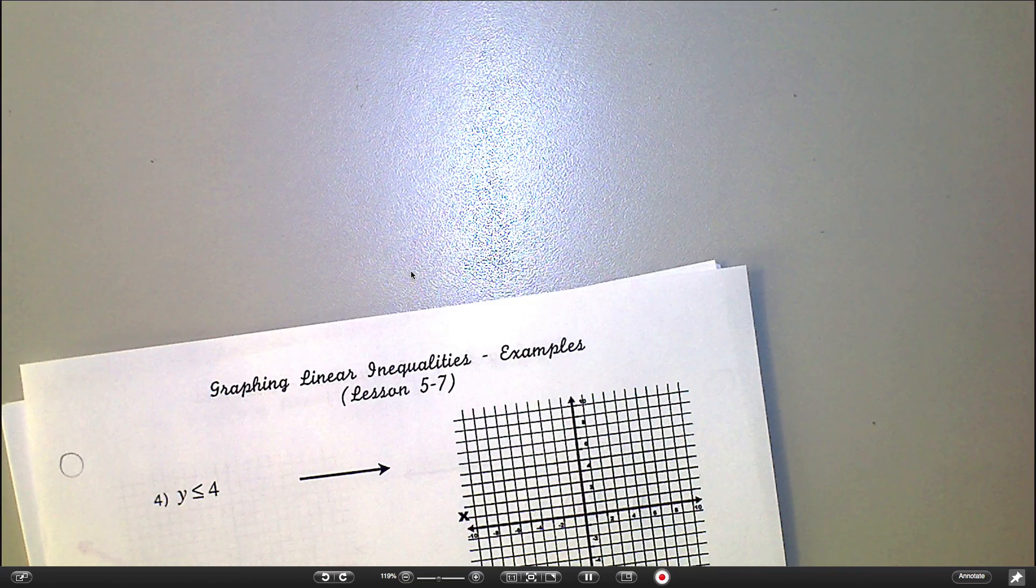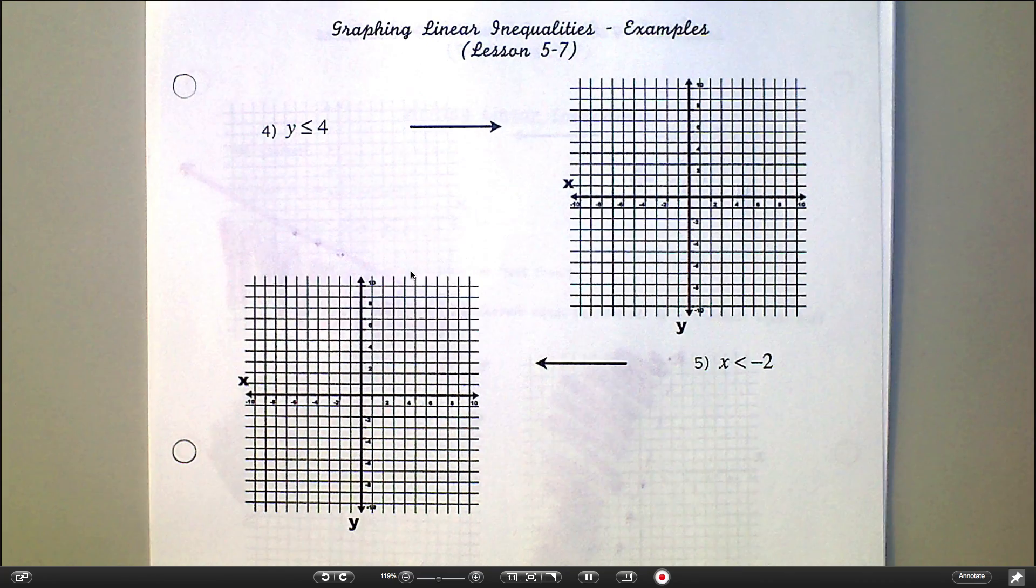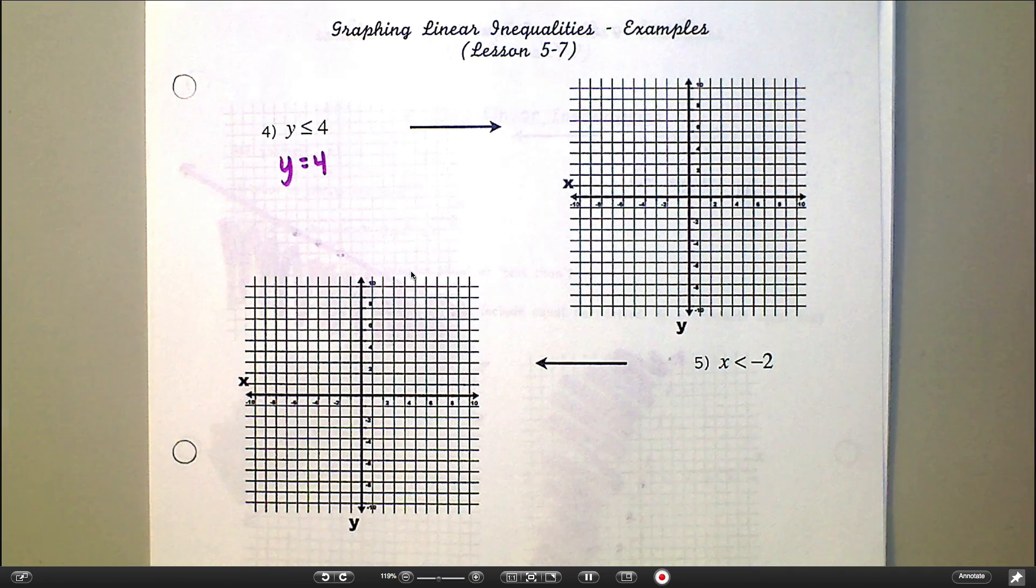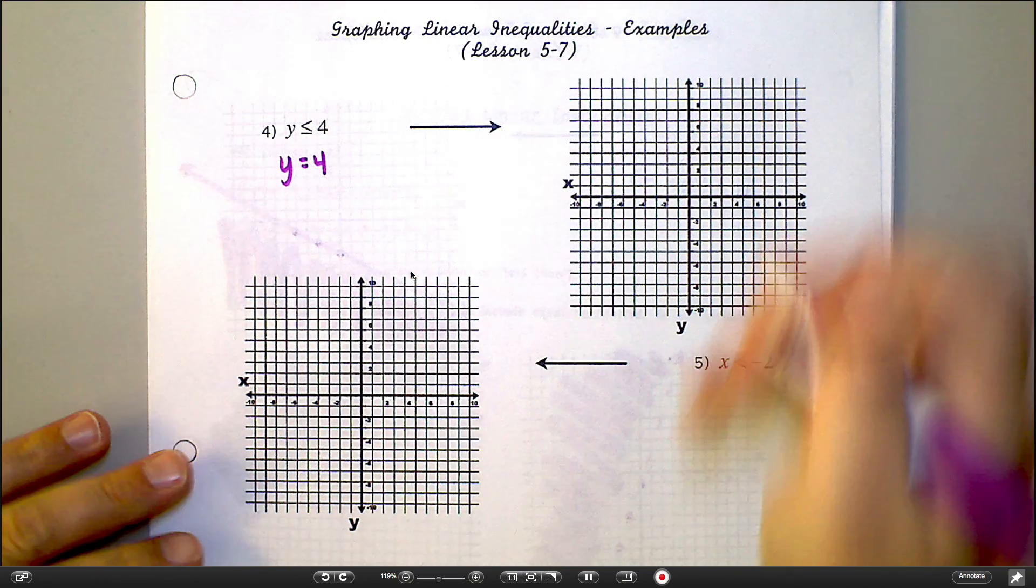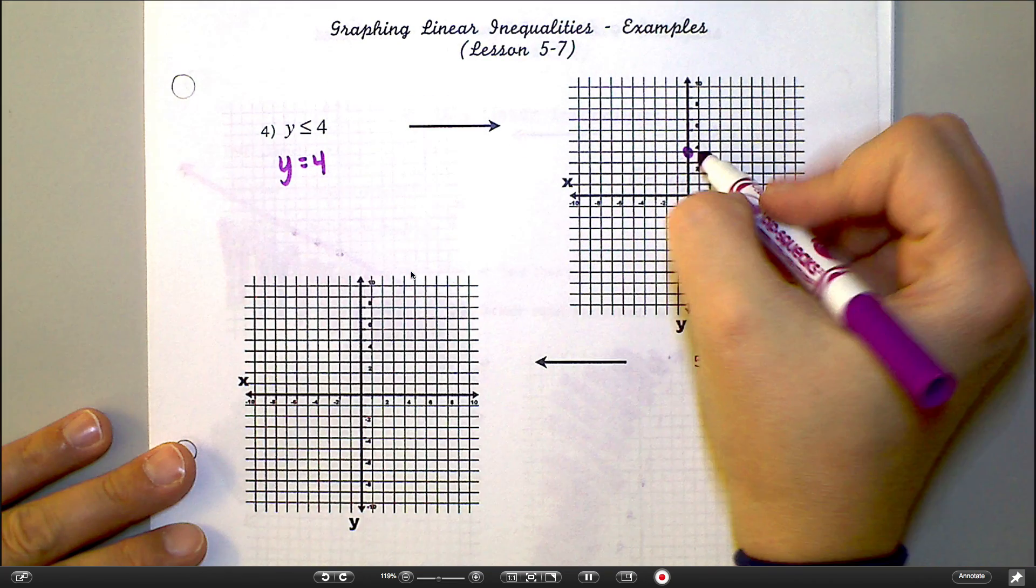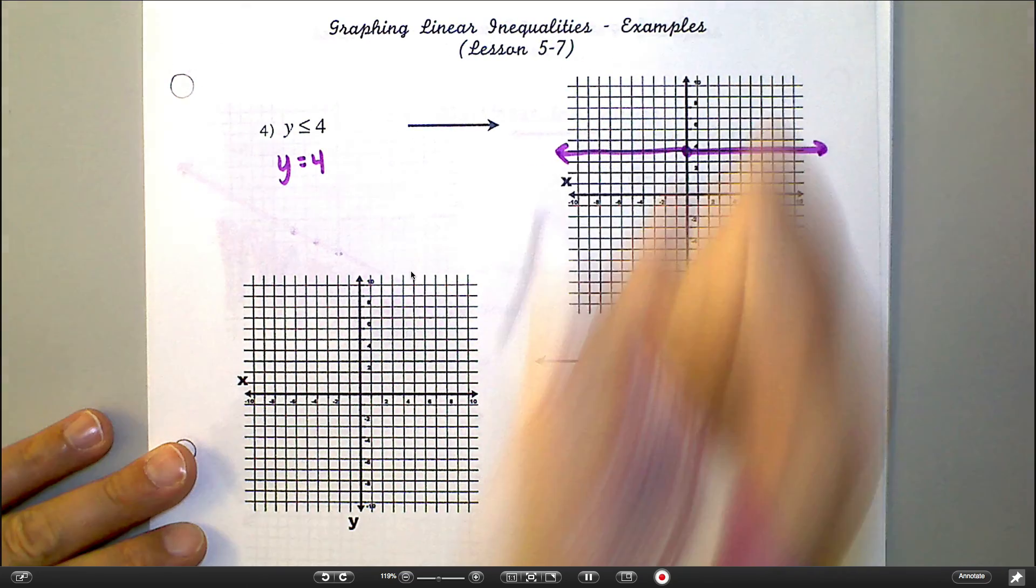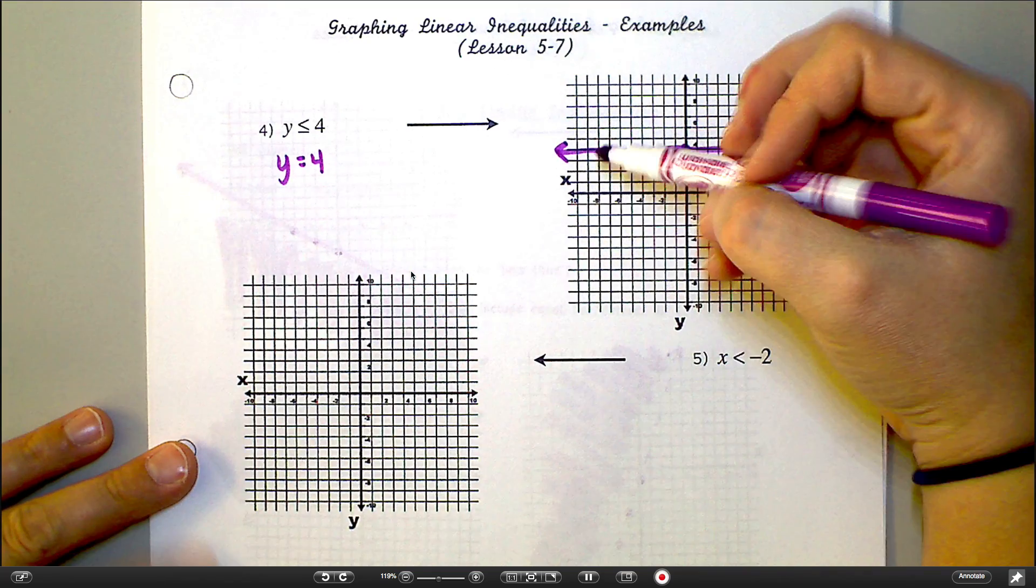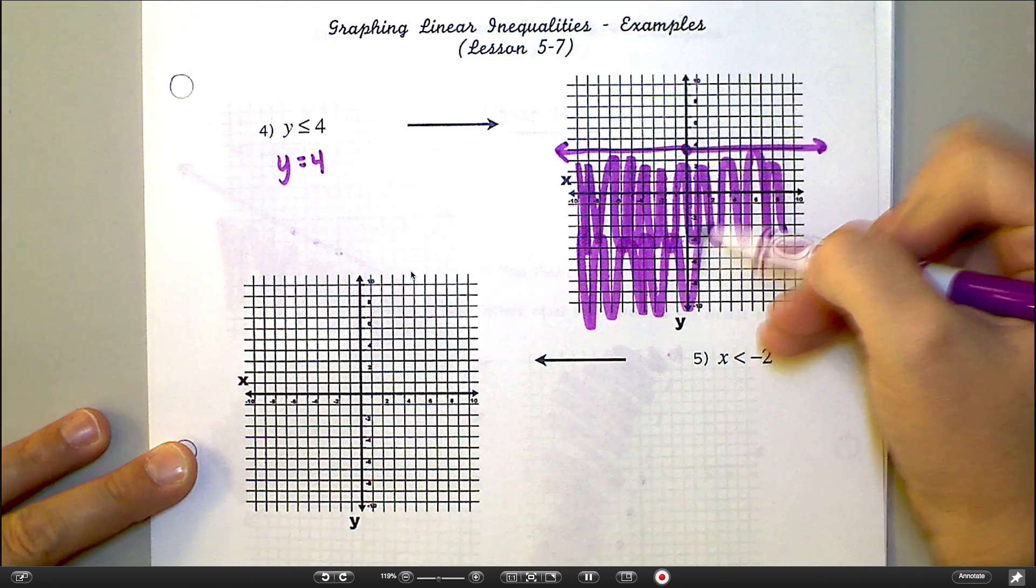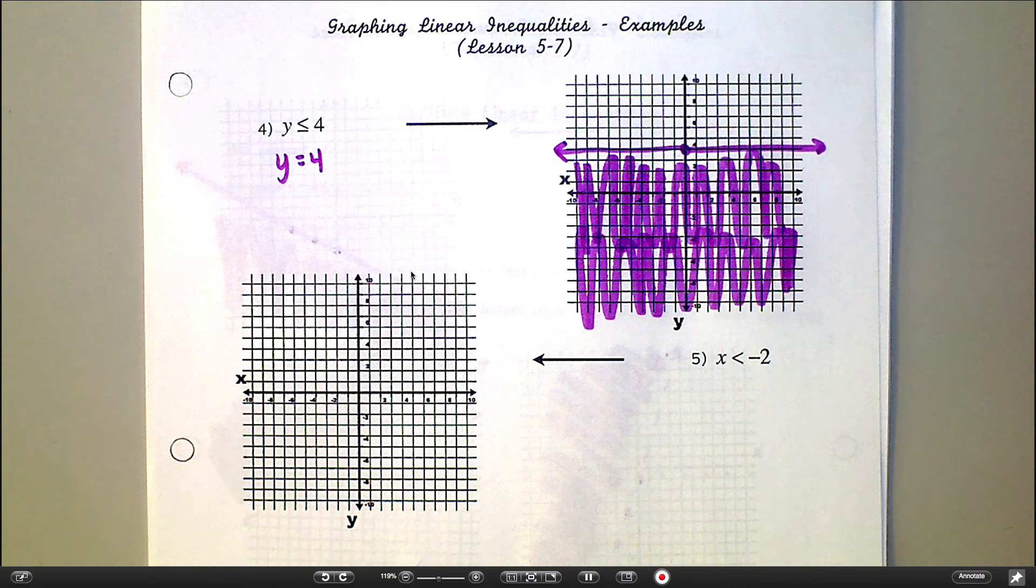Okay, let's look at the back of that page. I've got a few more here. So y is less than or equal to 4. Well, if I had the equation y equals 4, that would be a horizontal line at 4. So here's 4 on the y-axis. And then this does have an equal bar, so I'm going to use a solid line. And then this is less than or equal to, so I'm going to shade everything below the line. Because everything down here, the y coordinate, is smaller than 4.